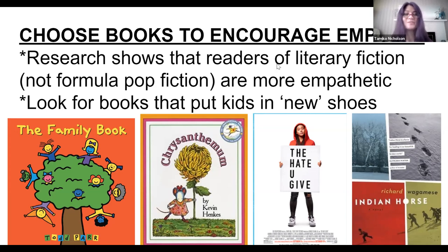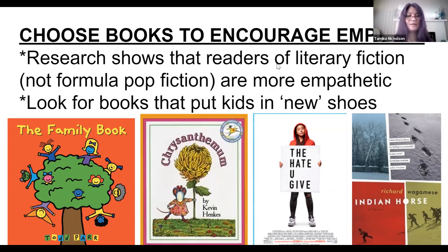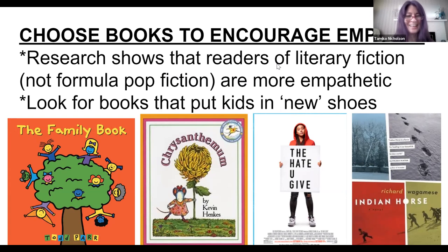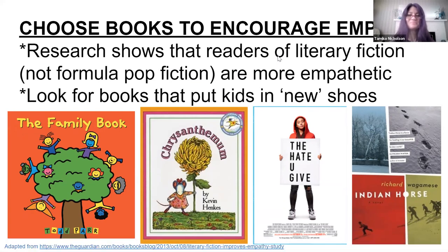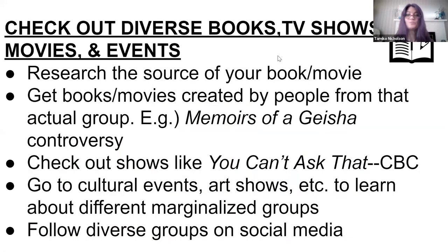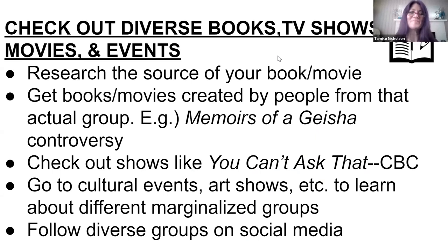Check out diverse books, TV shows, movies, events, etc. Make sure to research the source of your book or movie — ideally get them created by people from the actual group. For example, Memoirs of a Geisha was written by a white man from the States, and there's controversy in Japan about it because of the stereotype that geishas are prostitutes — they're not prostitutes, but there are many prostitutes who dress as geisha. This exoticizing of Japanese women is perpetuated in that book. Ideally you find sources straight from the source, versus an outside person looking in. There's also shows like 'You Can't Ask That,' where people from marginalized groups talk about their experiences — it shows the diversity within the group.